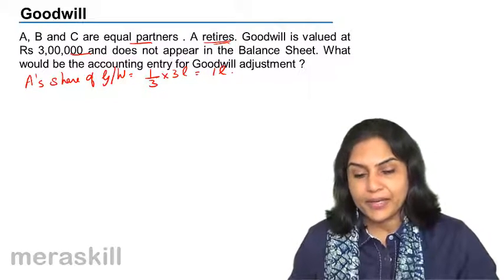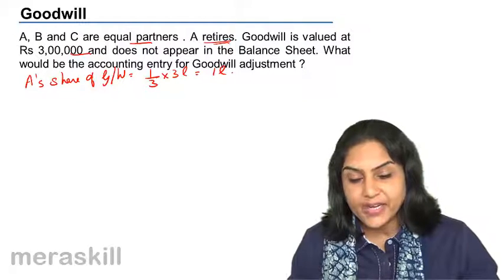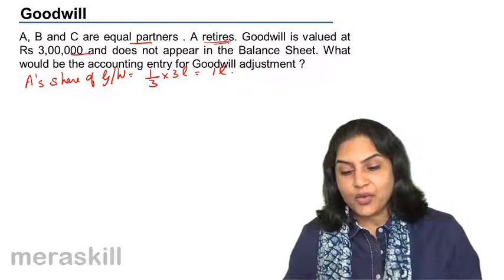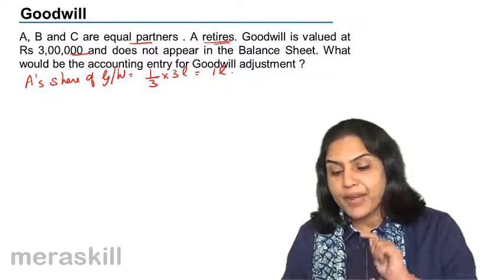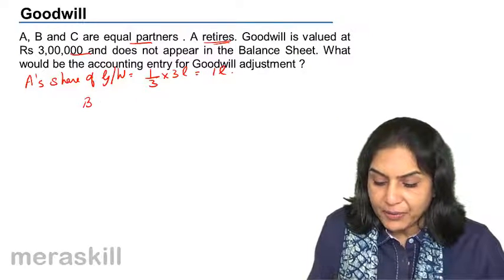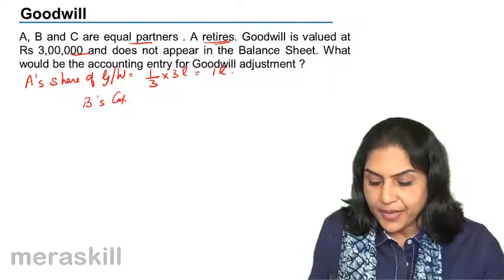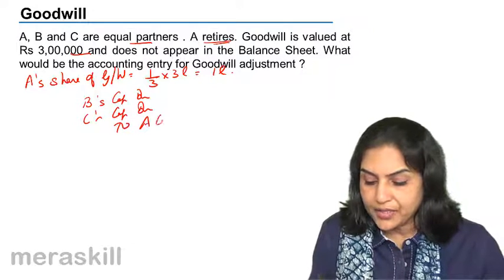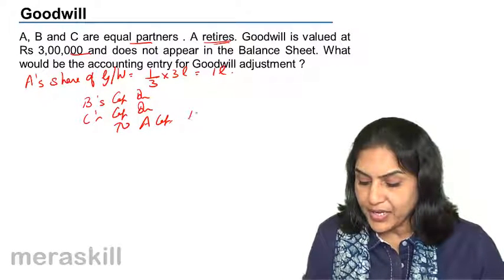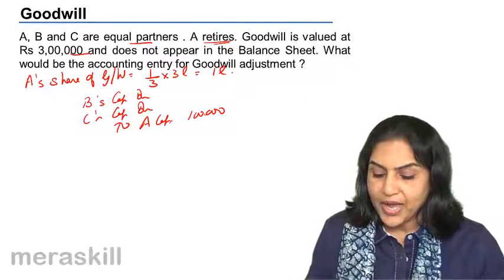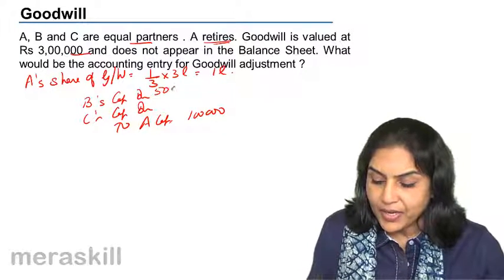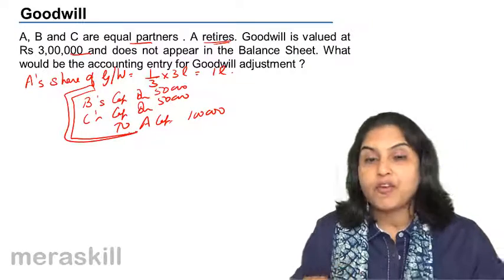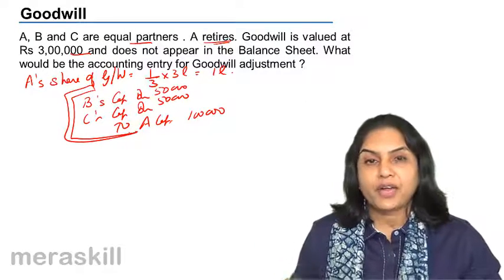What are the accounts which would be debited? B and C's accounts would be debited. What is their gaining ratio? The ratio between them is the same — it was equal before and it is equal now. Therefore, they will also bear this equally. The entry will be: B's capital account debit, C's capital account debit, to A's capital account. The amount credited to A's capital is 1 lakh, and B and C will bear this equally at 50,000 each. This is the accounting entry for adjustment of goodwill on retirement of the partner.